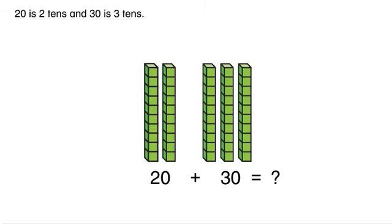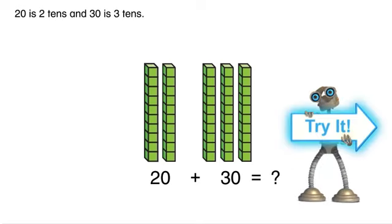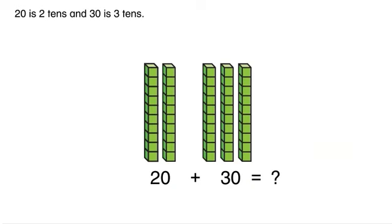2 tens is 20. 3 tens is 30. How is 20 plus 30 like 2 plus 3?